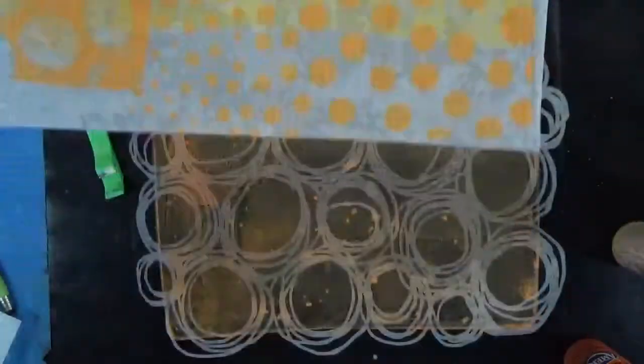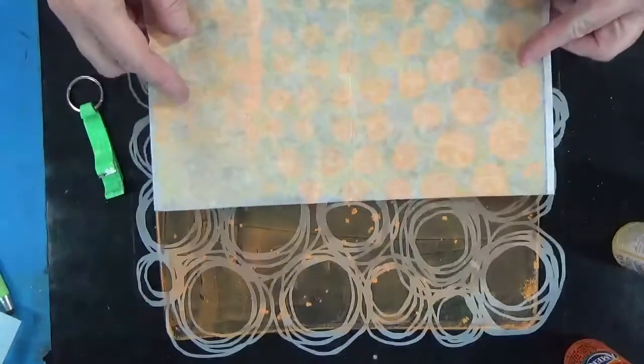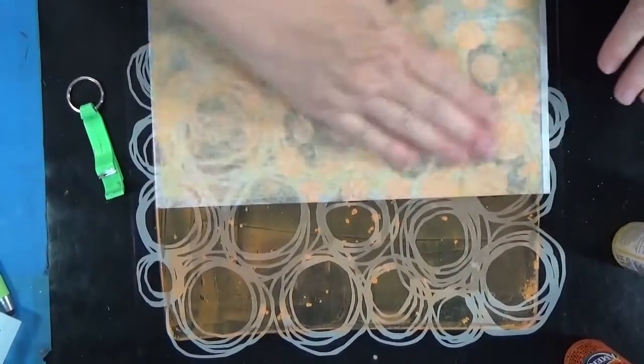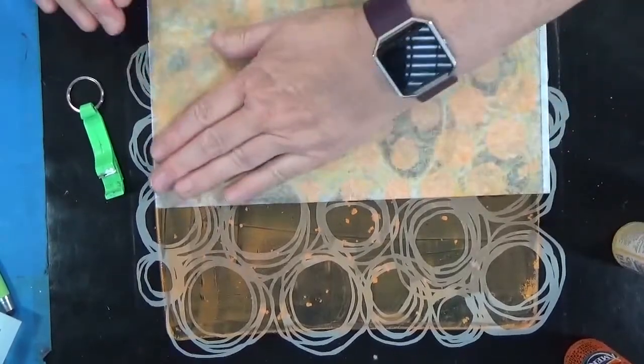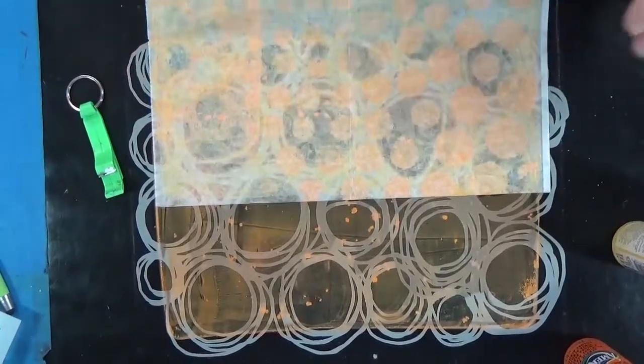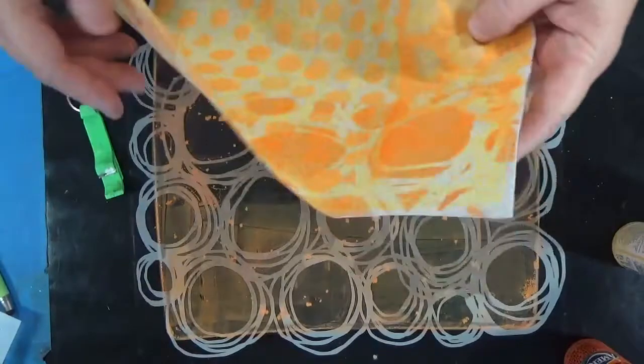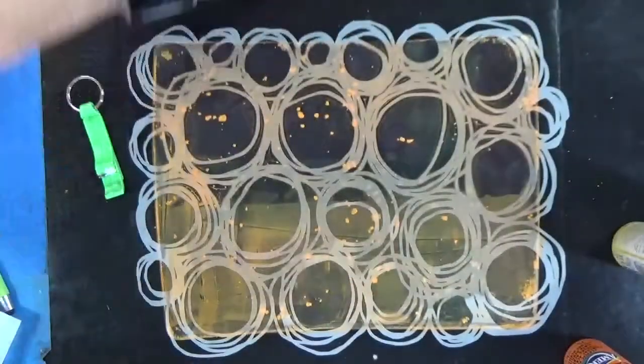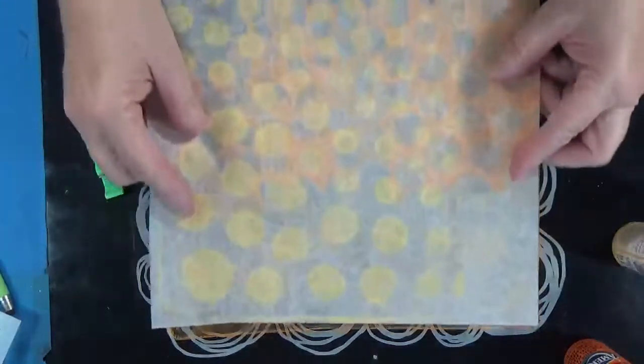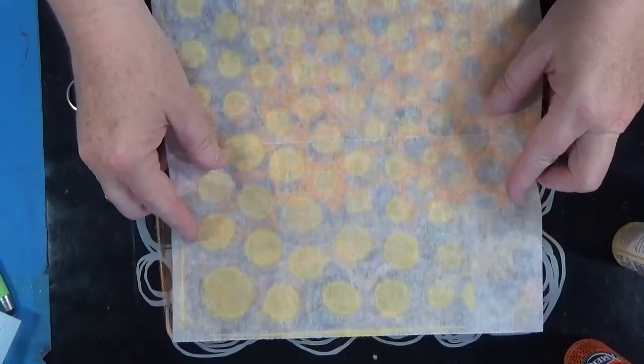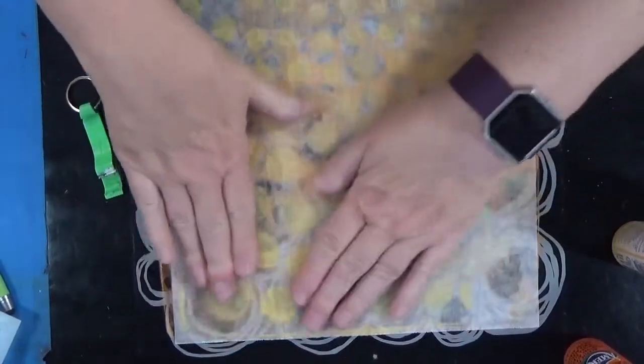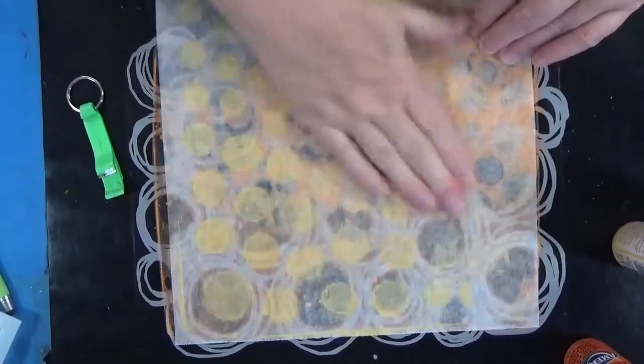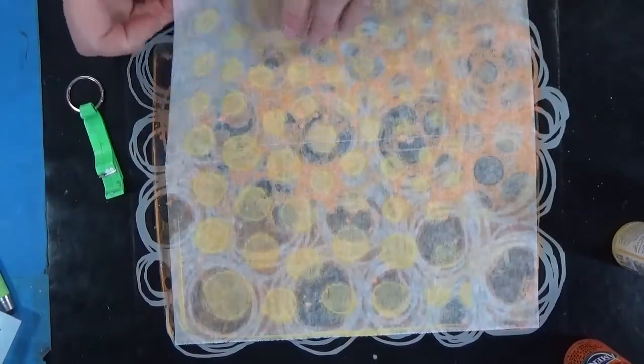I'm using another stencil, which is a favorite of mine, called Circle Circles. This is a Stencil Girl stencil, number L301. If you do not own this stencil, I would recommend it highly. I love this stencil. I use it a lot. And again, these yellow and orange papers are going to be used in a project that you're going to find in the convention as a make and take.